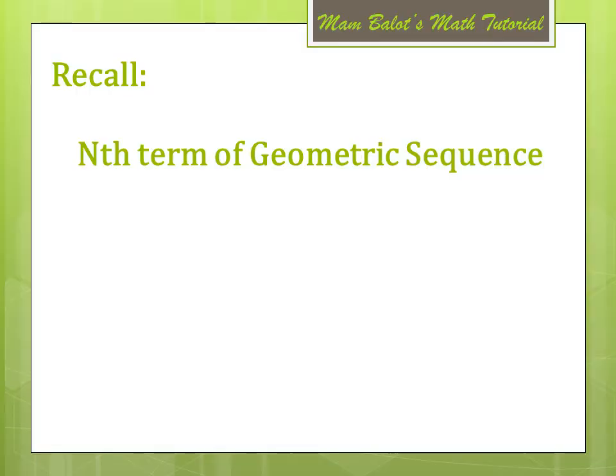But before that, let us recall what is the nth term of the geometric sequence. We have a sub n is equal to a sub 1 times r to the n minus 1, where a sub n is the nth term, a sub 1 is the first term, r is the ratio, and n is the number of terms.